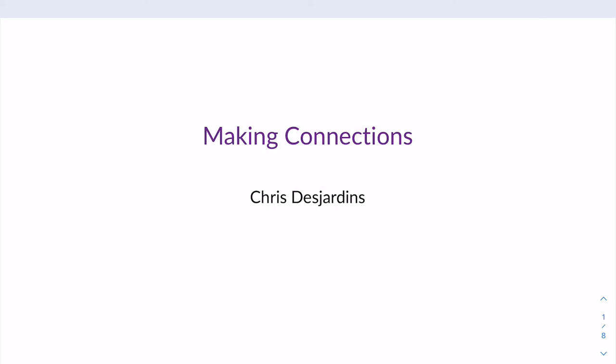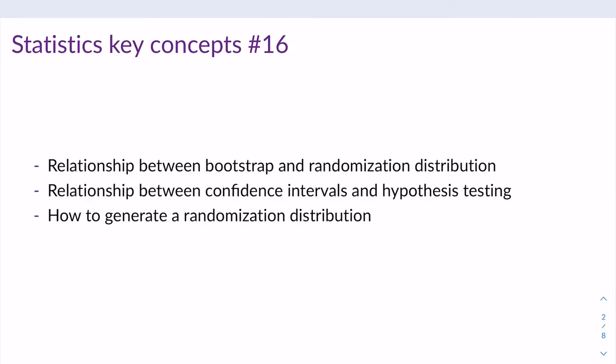Hello, this lecture is on section 4.5 in the textbook, and this section is all about drawing connections. After reading this section, you should understand the relationship between the bootstrap and the randomization distributions, understand the relationship between confidence intervals and hypothesis testing, and you should be able to generate a randomization distribution, or at least understand how and why they are created the way they are.